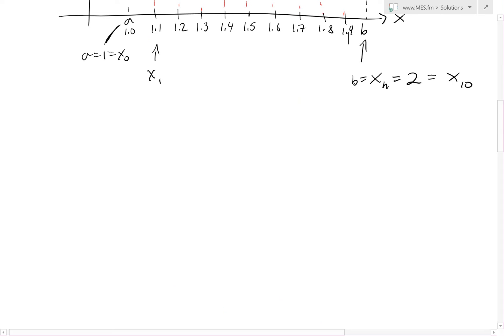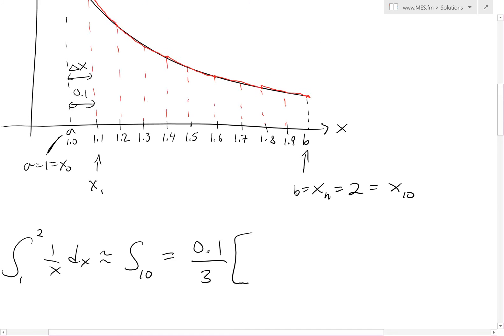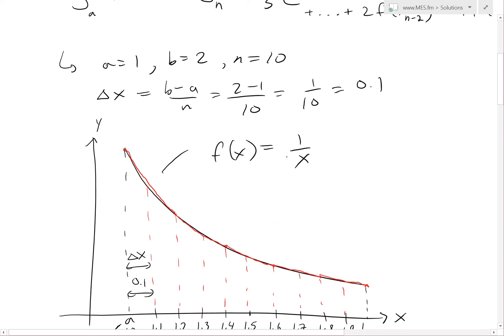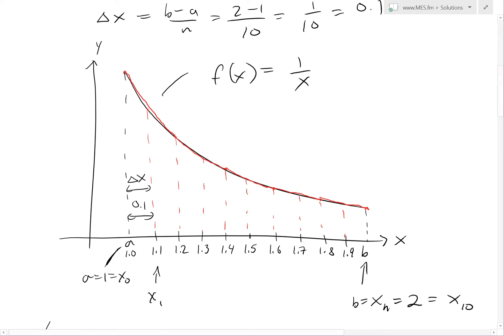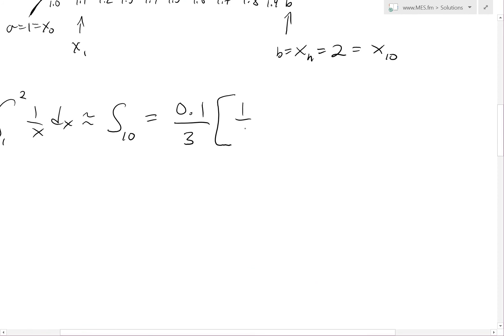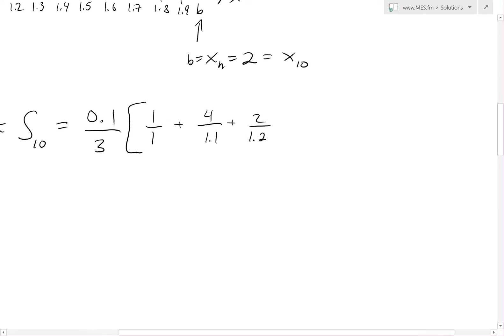Now we can solve: integral from 1 to 2 of 1 over x dx equals roughly S_10, which equals 0.1 divided by 3. Now we have f of 1, where f of x is 1 over x, so we put in these numbers: 1 divided by 1, that's x_0, plus 4 divided by 1.1, plus 2 over 1.2, plus 4 over 1.3, and it keeps going on.